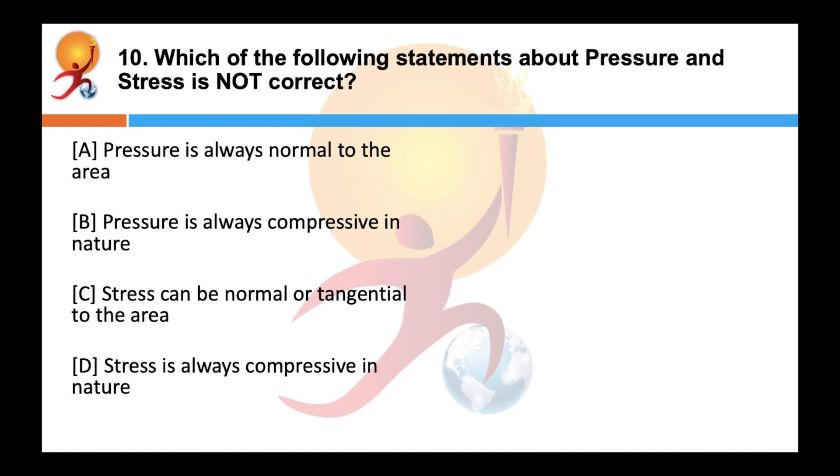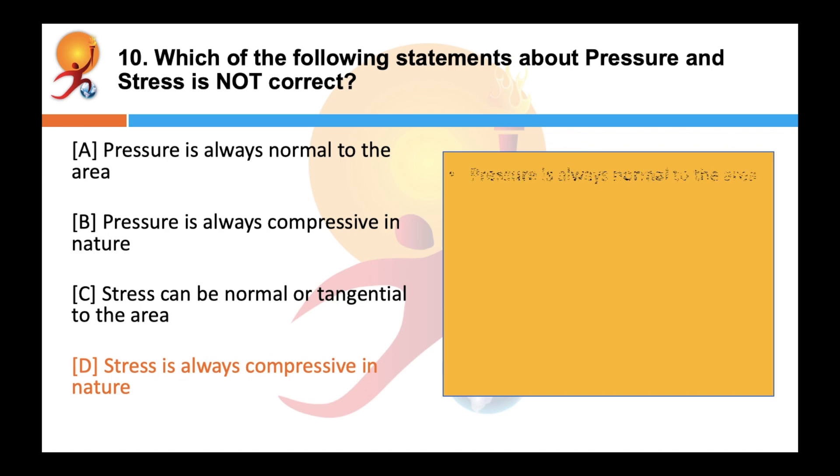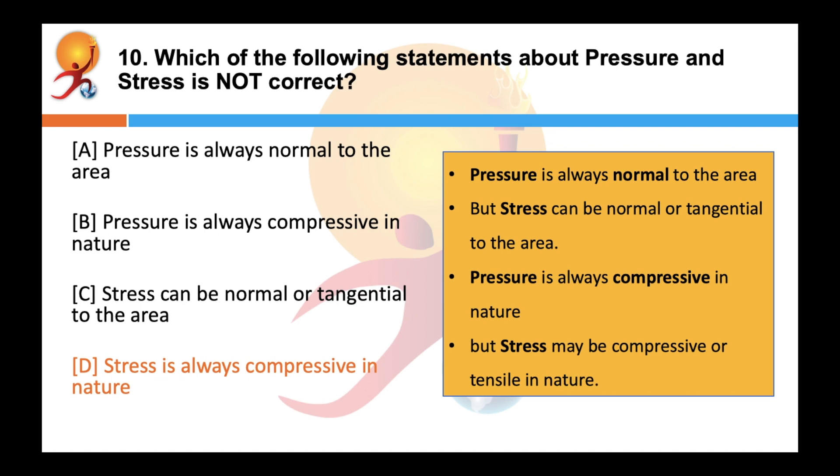Which of the following statements about pressure and stress is not correct? Correct answer is D. Stress is always compressive in nature. So to understand it further let us illustrate its characteristics. Pressure is always normal to the area but stress can be normal or tangential to the area. Pressure is always compressive in nature but stress can be compressive or tensile in nature.